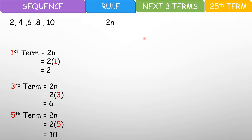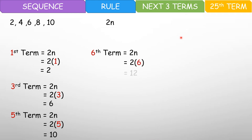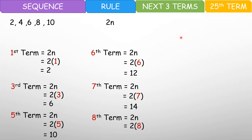Para makuha yung next 3 terms, apply pa rin natin ito. Dapat pala ang sunod dyan is 12, 14, 16. So tignan natin kung lalabas yung 12, 14, 16. Sixth term equals 2n. Substitute ulit — 2 times 6, that would be 12. Lumabas nga yung 12. Next, we have the seventh term. Seventh term is 2n — that would be 2 times 7 again, and that is 14. And then for the eighth term, you have 2n times 8, and that is 16.